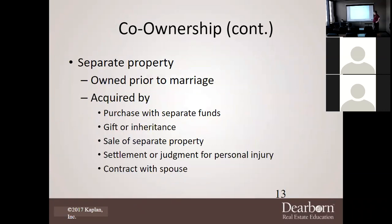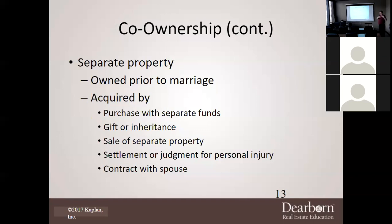Separate property is property owned prior to the marriage. Any assets before marriage are yours unless you combine things — if you put a spouse on it, everything becomes 50-50. Other ways to acquire separate property include purchase with separate funds, gift or inheritance, sale of separate property, settlement or judgment for personal injury, or a contract with your spouse. You could even state that a lump sum of money you're receiving is yours by written agreement with your spouse.